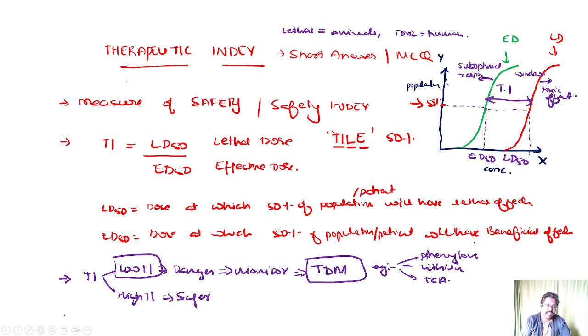This was about the class on therapeutic index. Please remember, you need to write a definition, it is a safety measure. You need to write a formula, you need to write a graph, and you need to explain what is LD50, ED50, and what is therapeutic index, what happens with low therapeutic index and high therapeutic index, and what will be the indication for therapeutic drug monitoring and examples. Hope this would help you in terms of framing your answers in your main exams. Thank you.